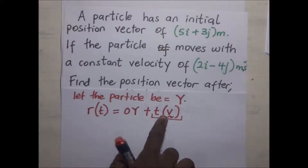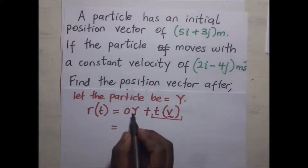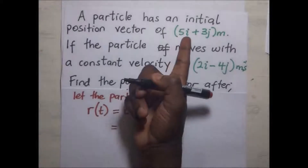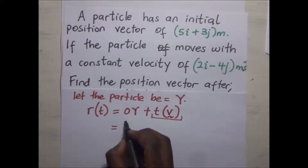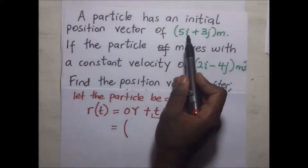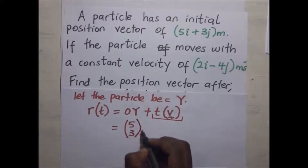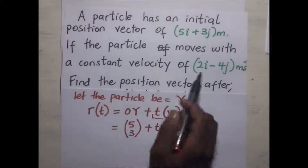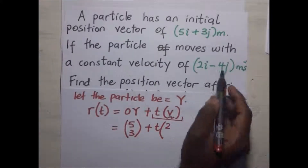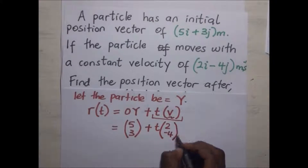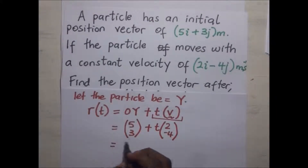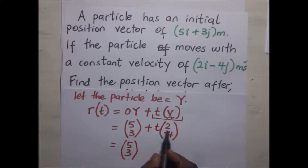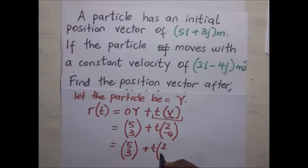So the position vector of y, according to our question, is 5i plus 3j. We can write this in column form as [5, 3], plus time times the velocity vector. The constant velocity this particle is traveling with is [2, -4]. So this becomes [5, 3] plus t times [2, -4].